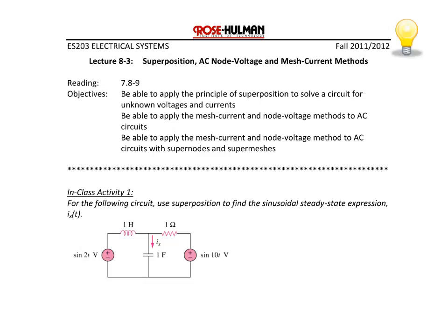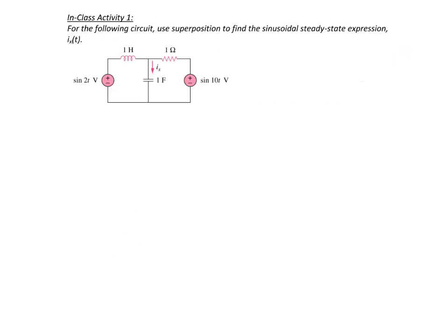Let's look at the first example. For the following circuit, use superposition to find the sinusoidal steady state expression Ix. The first thing to notice is that we have two sources: a voltage source sine 2t and a voltage source sine 10t. The only way to solve this problem is to use superposition because the left source has a frequency of 2 radians per second and the right source has a frequency of 10 radians per second.